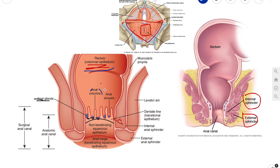All the anal valves collectively form an irregular circle. You can see this irregular circle marked in black down there — this line is known as the pectinate line.